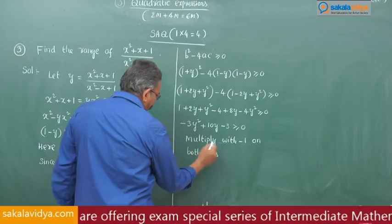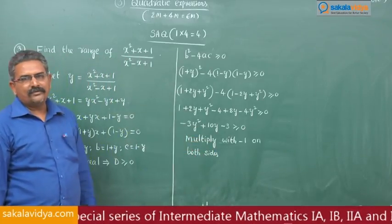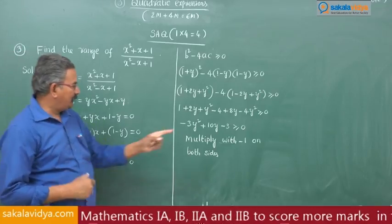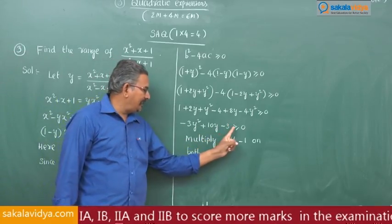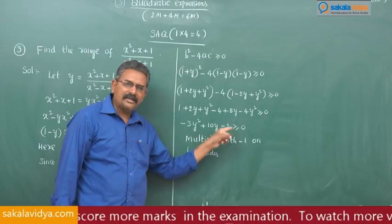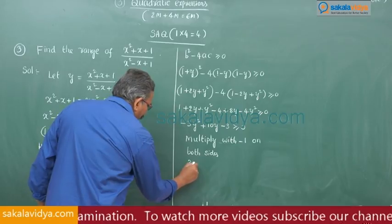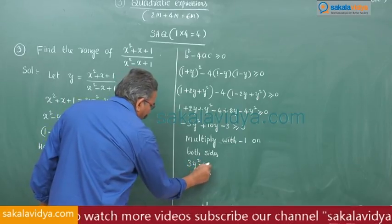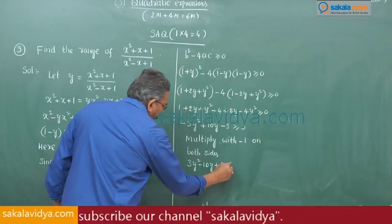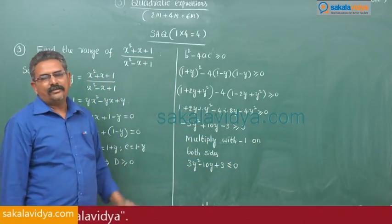When we multiply with -1 on both sides, the inequality symbol changes — greater than becomes less than. So we get 3y² - 10y + 3 ≤ 0. This is very important to remember.